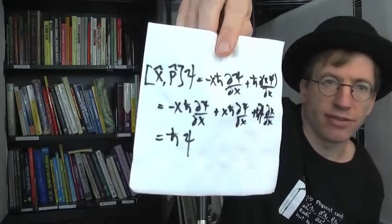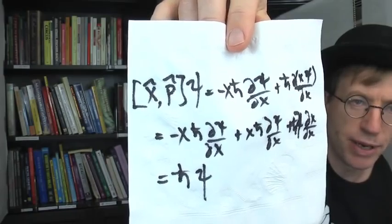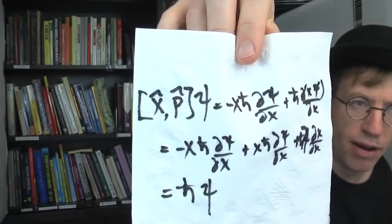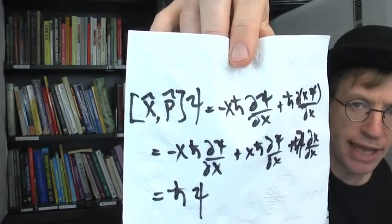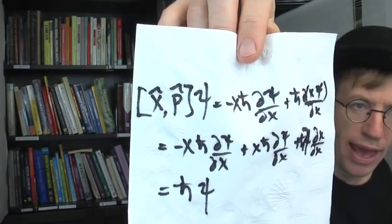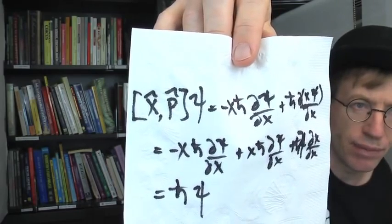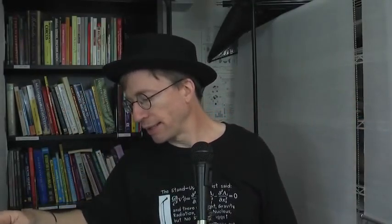Here is the answer to the first problem. We bring in an h-bar for the momentum operator, which gives it units of momentum, and carry that through. We end up with h-bar times a wave function — which looks more like the standard sort of thing we're supposed to get in class.